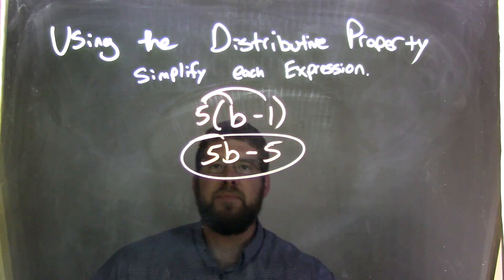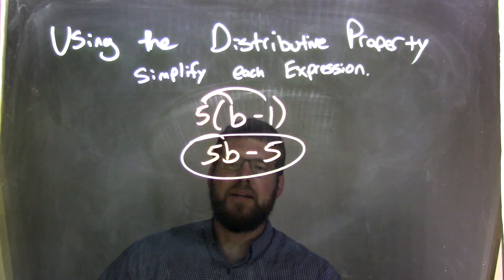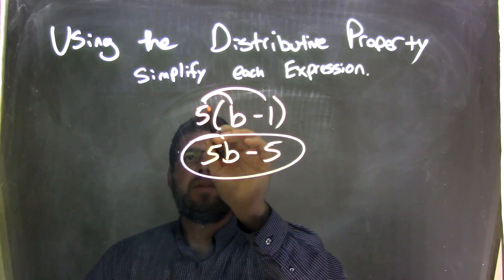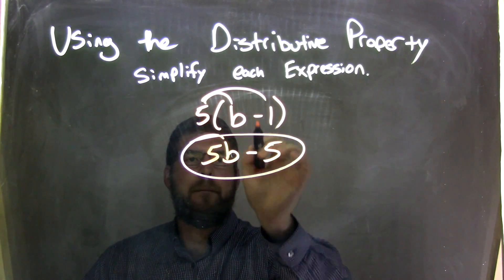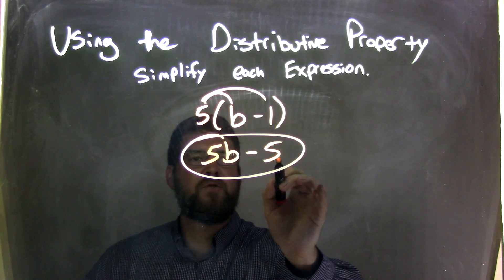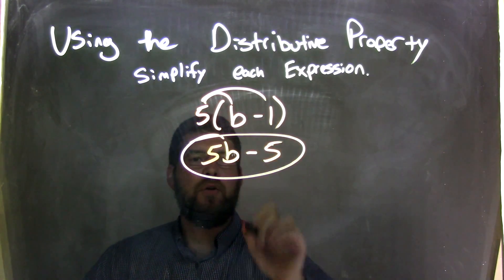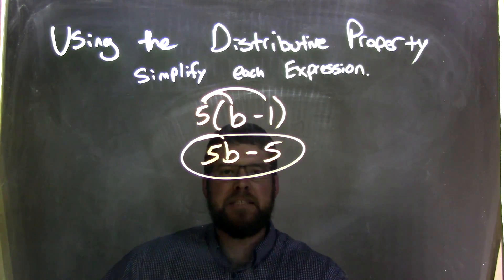So again, let's recap. We have the b minus 1 inside the parentheses, nothing we can do about that, they're not like terms. Multiplication on the outside by the 5. So 5 times b, let's distribute. 5 times b is 5b, bring down the subtraction, and then 5 times 1 is 5. So we distributed the 5 to both parts, and now we're left with our final answer of 5b minus 5.